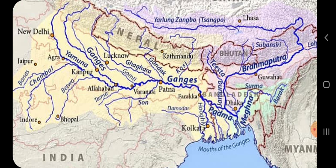The rainfall in this region is very high. The river overflows its banks causing floods. Tea is grown on the slopes of the hills. Guwahati, Dibrugarh and Digboi are some important towns of this region.